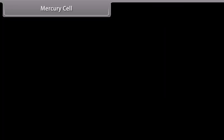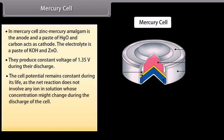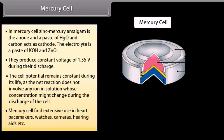Mercury cell. In mercury cell, zinc-mercury amalgam is the anode and a paste of HgO and carbon acts as cathode. The electrolyte is a paste of KOH and ZnO. They produce constant voltage of 1.35 volt during their discharge. The cell potential remains constant during its life as the net reaction does not involve any ion in solution whose concentration might change during the discharge of the cell. Mercury cell finds extensive use in heart pacemakers, watches, cameras, hearing aids, etc.